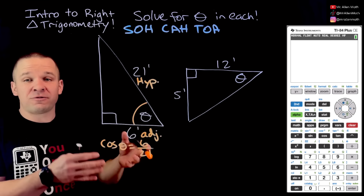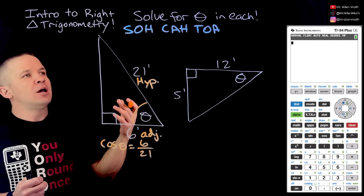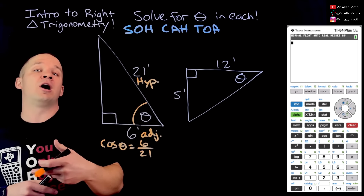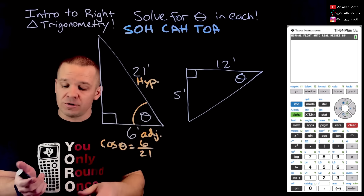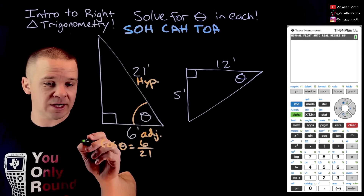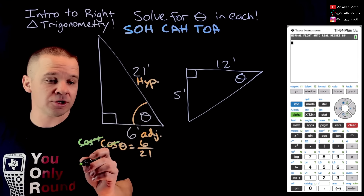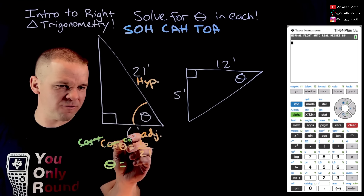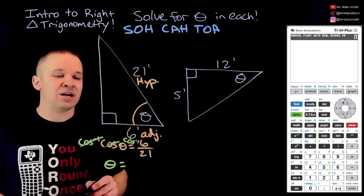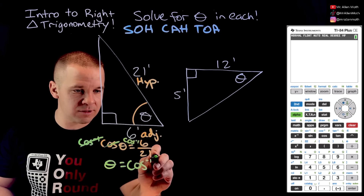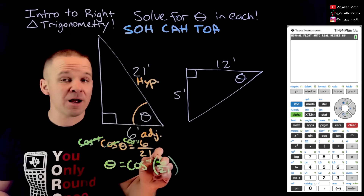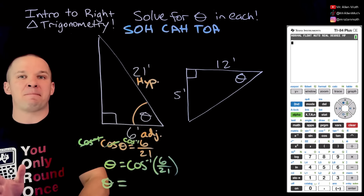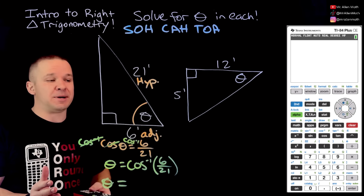We have what's called inverse trig functions. If it's an inverse function, it's going to undo the function — much like division is the inverse of multiplication, or subtraction undoes addition. So if I take the cosine inverse of both sides, those cancel, leaving me with theta. Whatever I do to one side, I do to the other. So theta equals cosine inverse of 6 over 21. I can plug this into my calculator, and it spits out the angle measure — like mathematical magic.